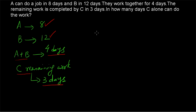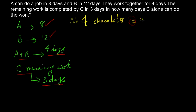We take the number of chocolates as the LCM of 8 and 12, which is equal to 24. Since A is taking 8 days and B is taking 12 days, we take the LCM of 8 and 12 as the number of chocolates, so it is equal to 24.